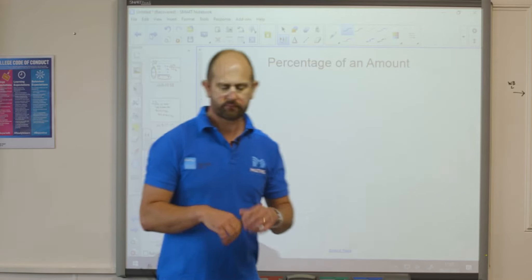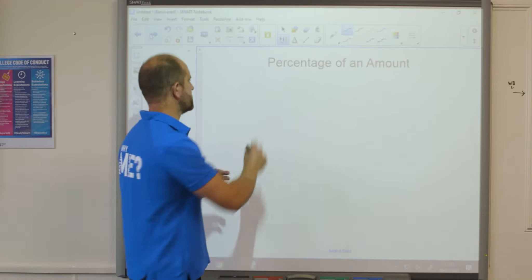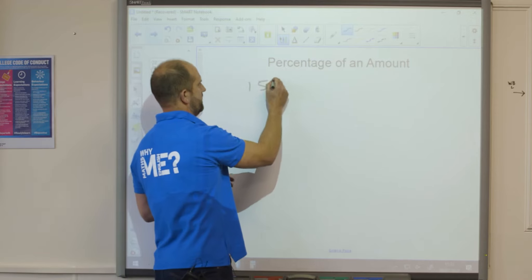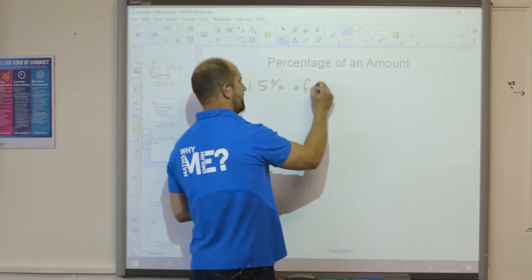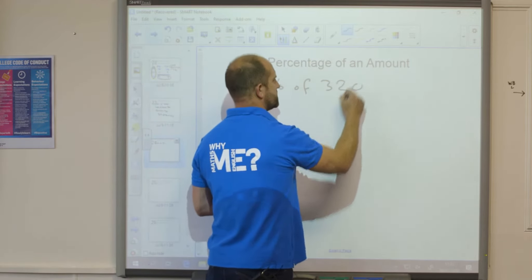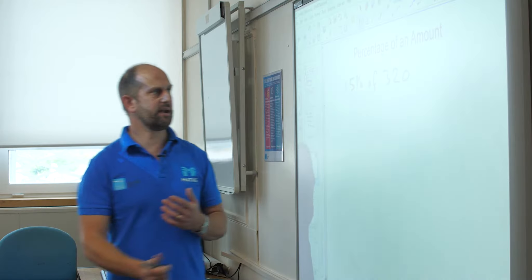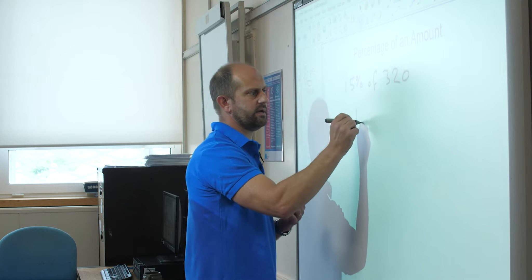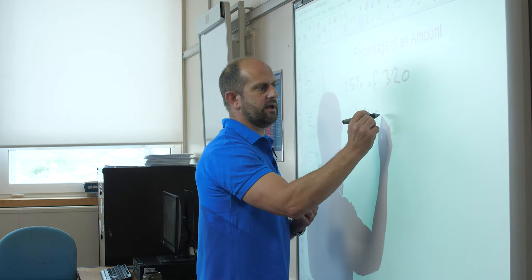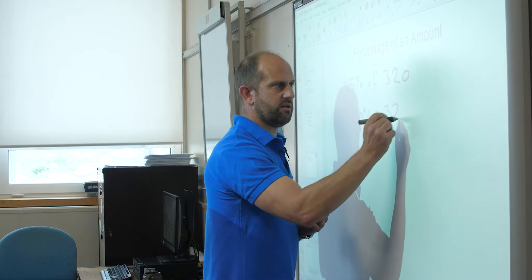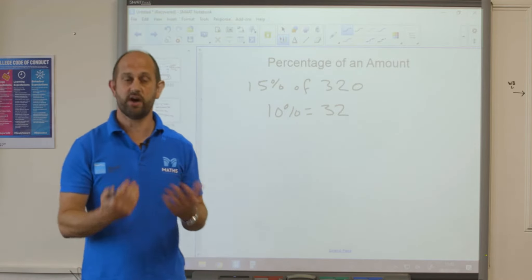Another example then, I want to find 15% of 320. Could do exactly the same again. 10% of 320. So 10% equals 32. 320 divided by 10.